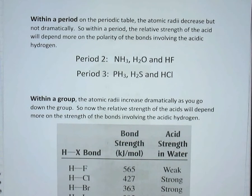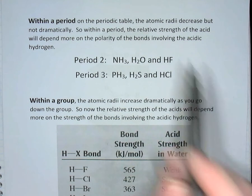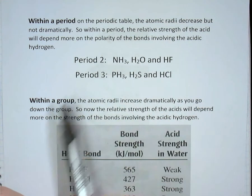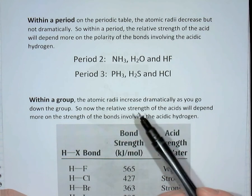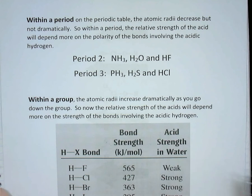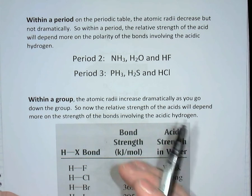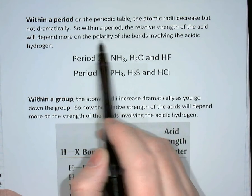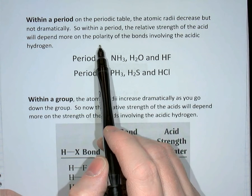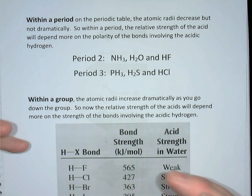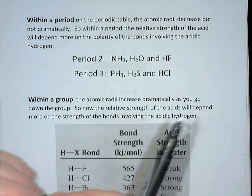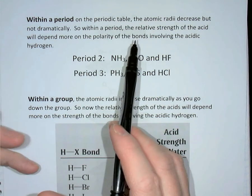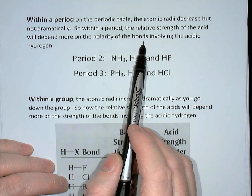When you're looking within a period on the periodic table — within a row — the atomic radii decrease, but not dramatically. They decrease because there are more protons in the nucleus; the valence electrons are within the same energy level, and the greater nuclear charge pulls the electron cloud closer to the nucleus. So within a period, the relative strength of the acid depends more on bond polarity than on bond strength. The strength of the bond is determined by the sizes of the atoms involved — the larger the atoms, the greater the distances, and therefore the weaker the bonds. But within a period, atomic radii are not changing dramatically, so we focus on the polarity of the bonds.